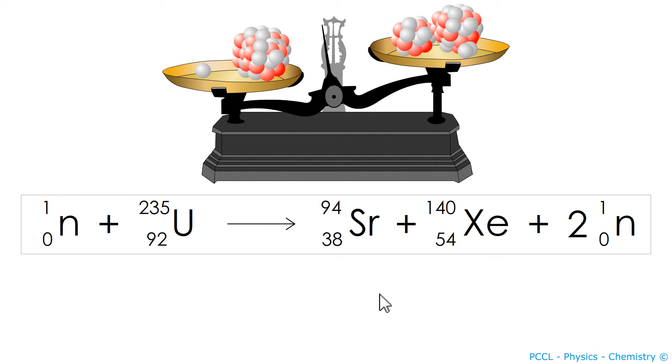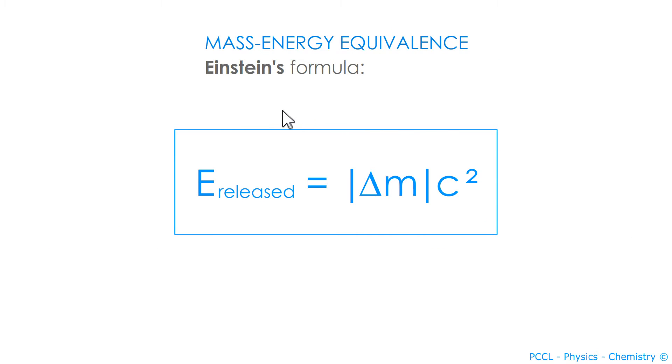Energy gain. Mass loss. There is a link, obviously. And it is Einstein's relation E equals MC squared that gives us the link here.